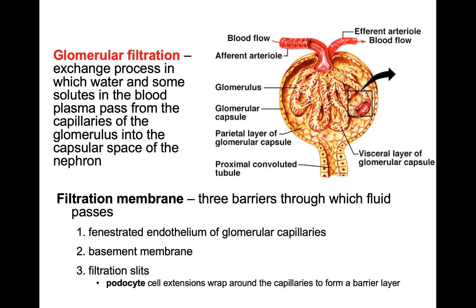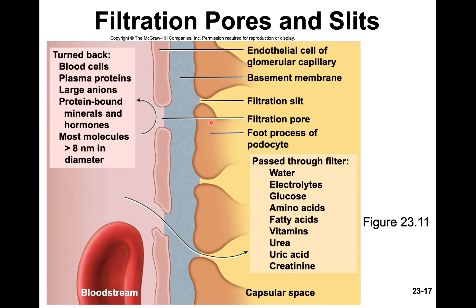Filtrate has to first filter out of the fenestrations, then filter out of the podocytes before it can be captured in the capsular space. There are items in the blood circulation that we do not want to filter out into the tubule to eventually be excreted. Those items include blood cells, large plasma proteins, larger anions, and any kind of protein-bound hormone — you should not be peeing those out.